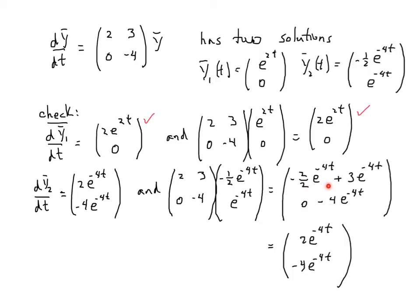These add to give 2e to the minus 4t, and this stays minus 4e to the minus 4t. When we took the derivative and multiplied by the matrix, we got the same result. Therefore, both y1 and y2 are solutions.